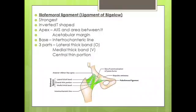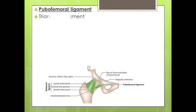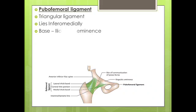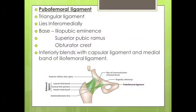Next is the pubofemoral ligament. It is a triangular ligament and lies inferomedially. Its base is attached to the iliopubic eminence, superior pubic ramus, and obturator crest. Inferiorly, it blends with the capsular ligament and medial band of the iliofemoral ligament.